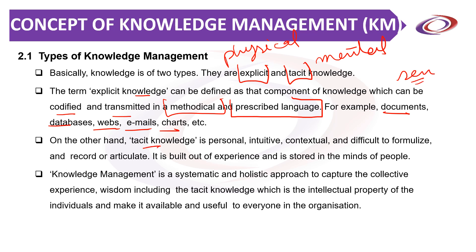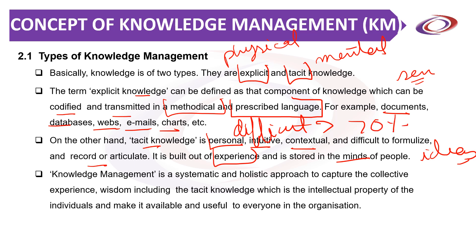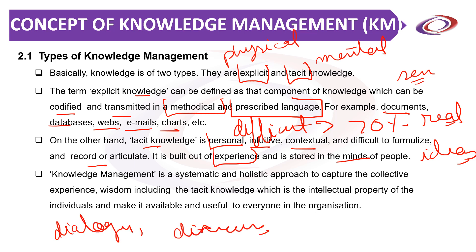Tacit knowledge, on the other hand, is more personal, intuitive and contextual. It is difficult to formalize or record — it is mental knowledge built out of experience and stored in the minds of people. The ideas and opinions people hold on the basis of their past experience and skills are referred to as tacit knowledge. It constitutes almost 70% of the knowledge in an organization, but it is very difficult to convert into real values without a proper management technique through intensive dialogues.